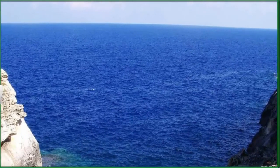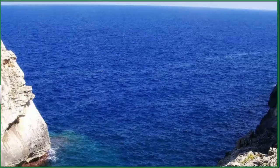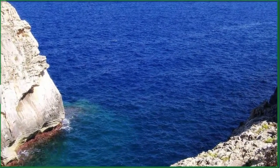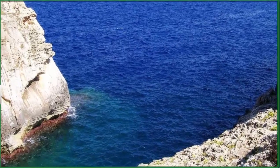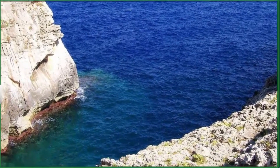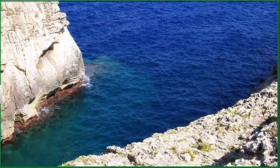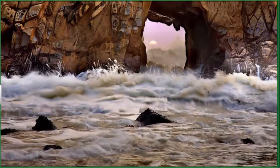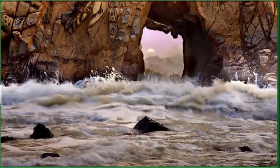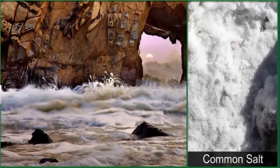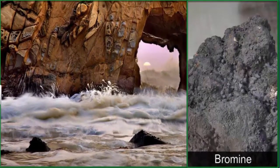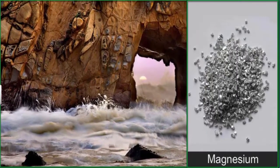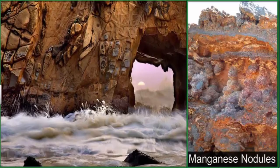Around 70% of the surface of the earth is covered by water. The water of the seas and oceans and the ocean floors also have rich mineral deposits. Ocean waters are a rich source of minerals like common salt, bromine and magnesium, while the ocean floors are loaded with mineral deposits like manganese nodules.